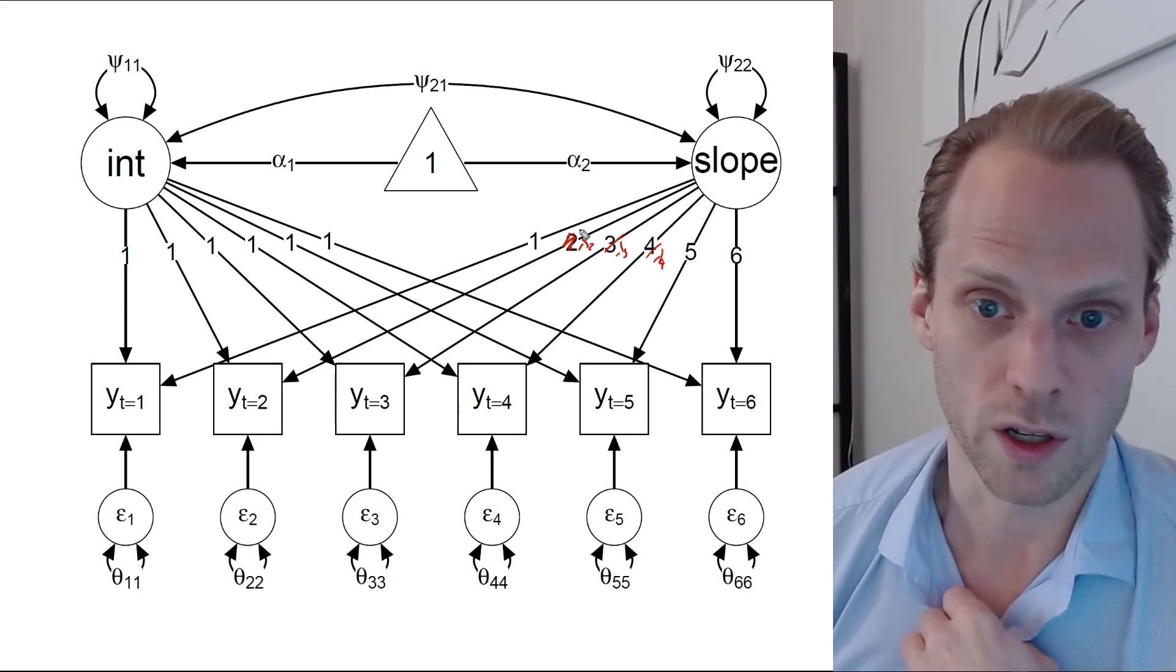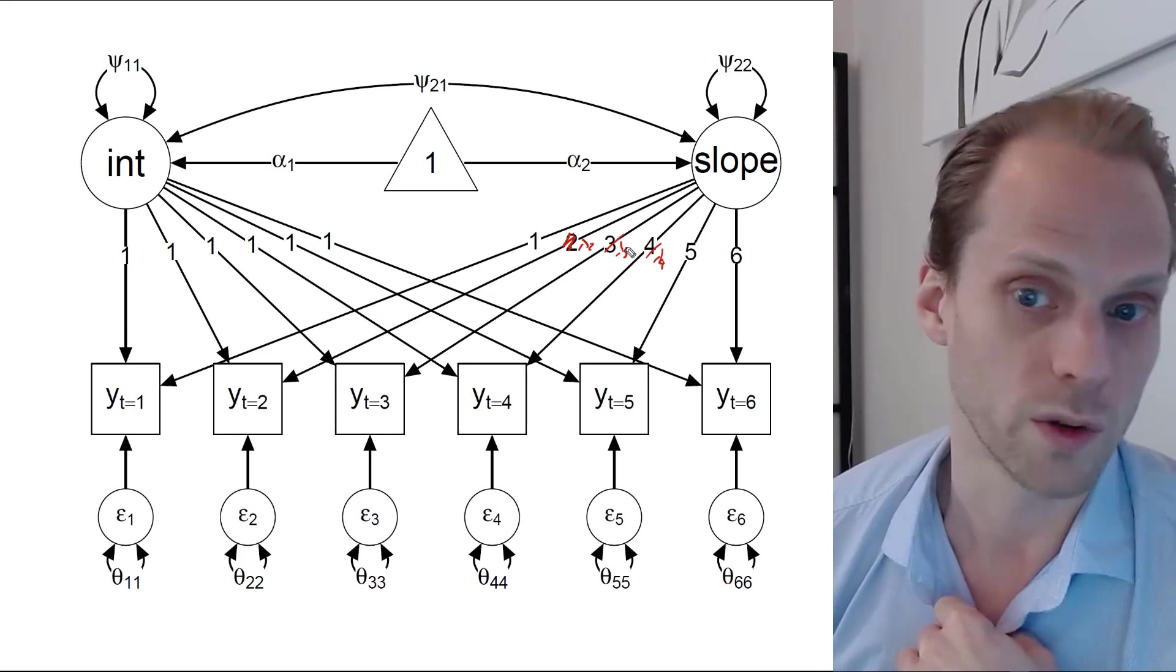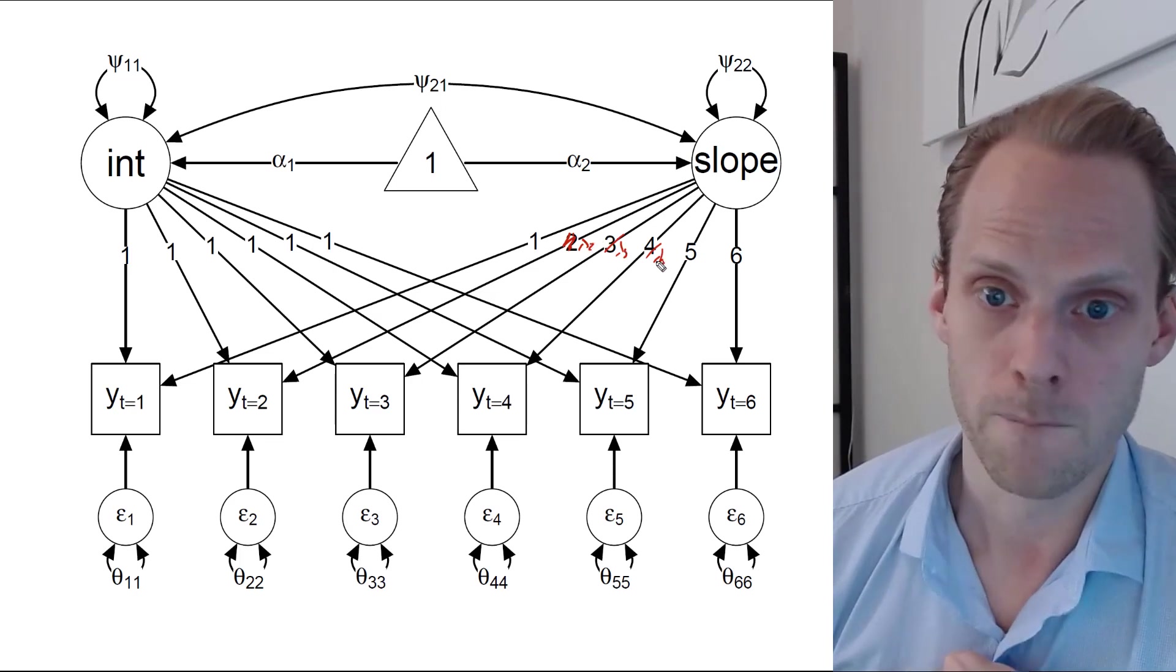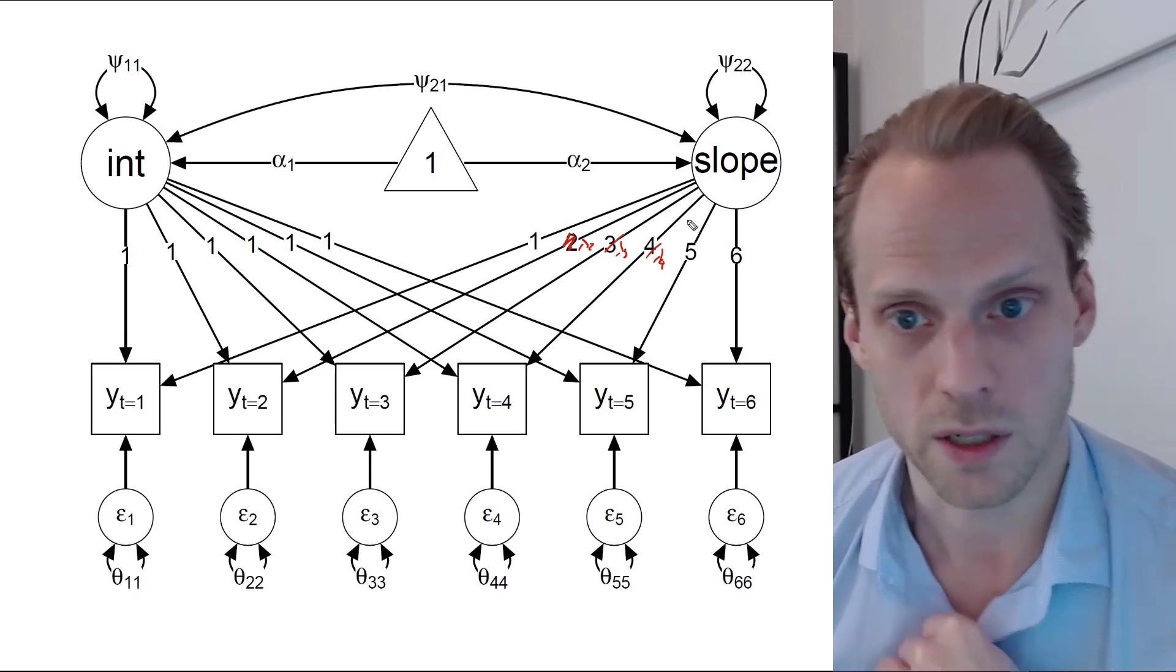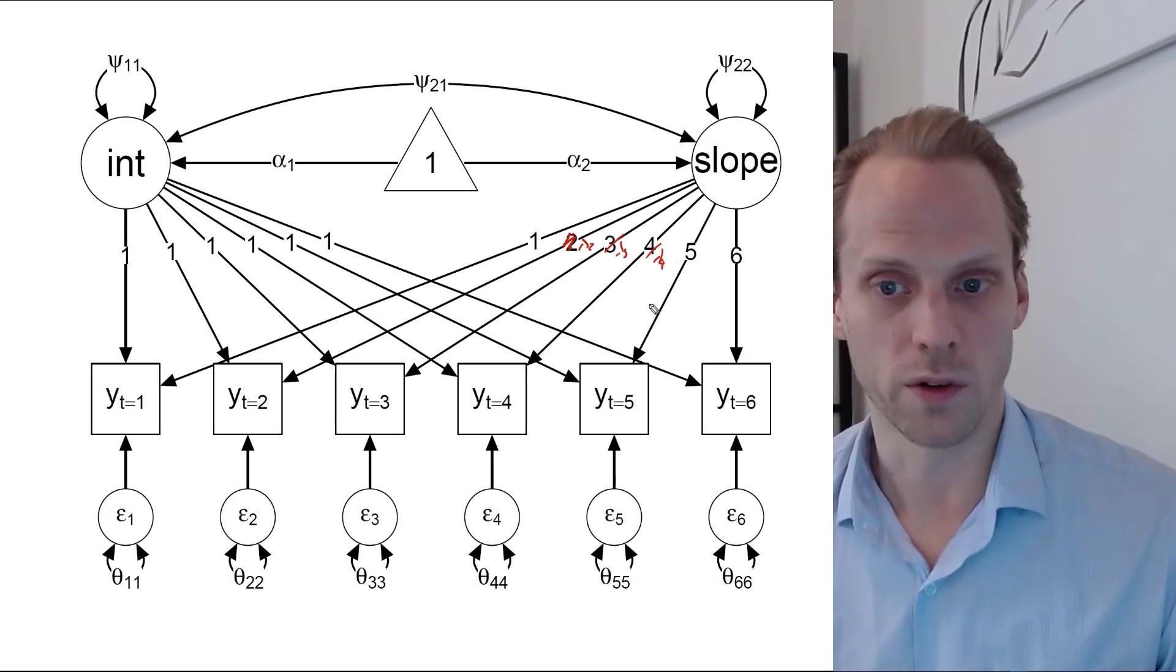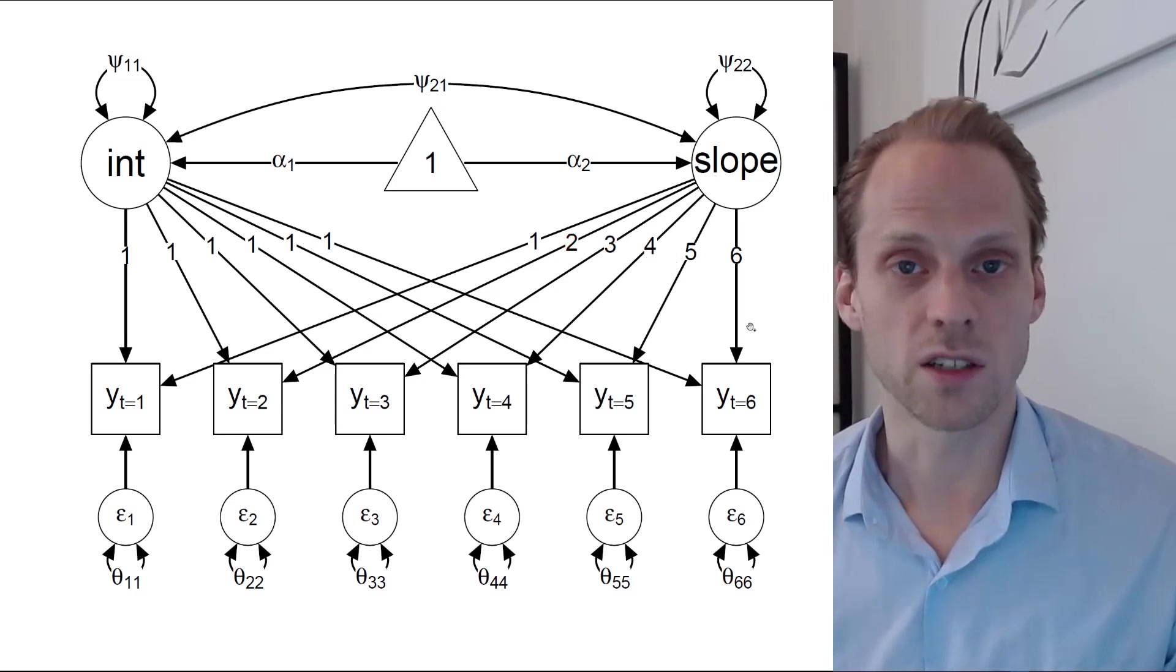With an inequality constraint that lambda 2 is lower than lambda 3, lambda 3 is lower than lambda 4, and then you get non-linear growth patterns. And there are many more of these kinds of extensions as well possible.